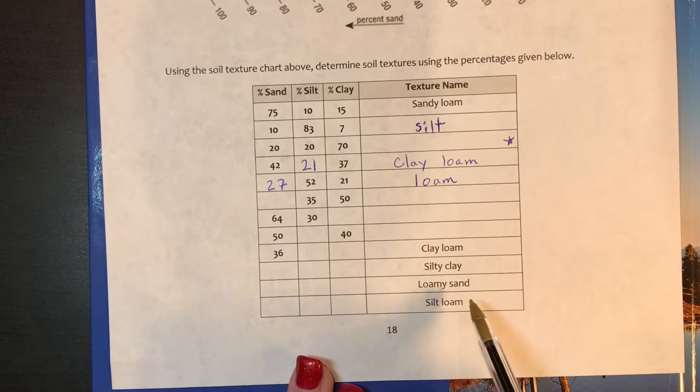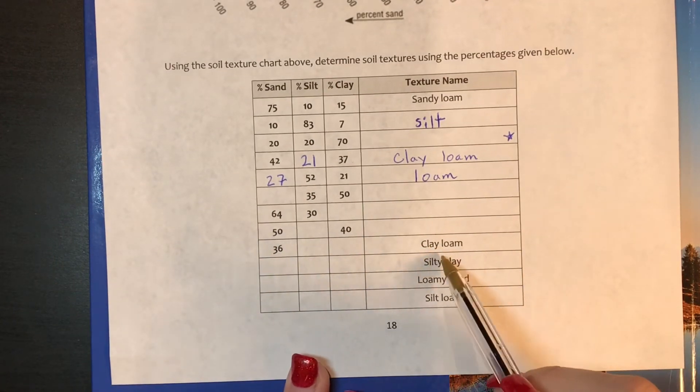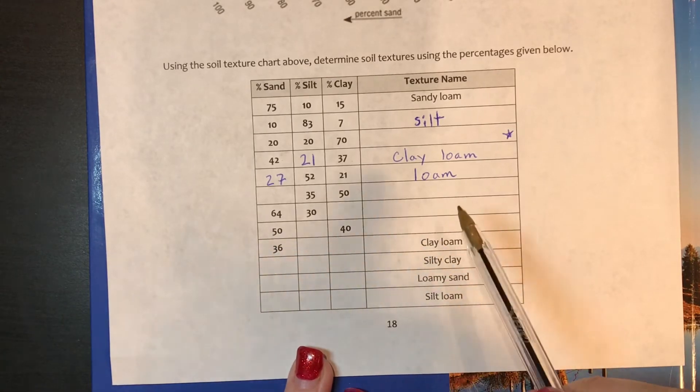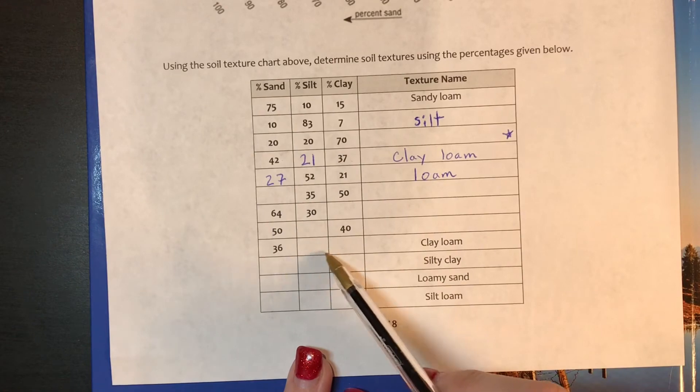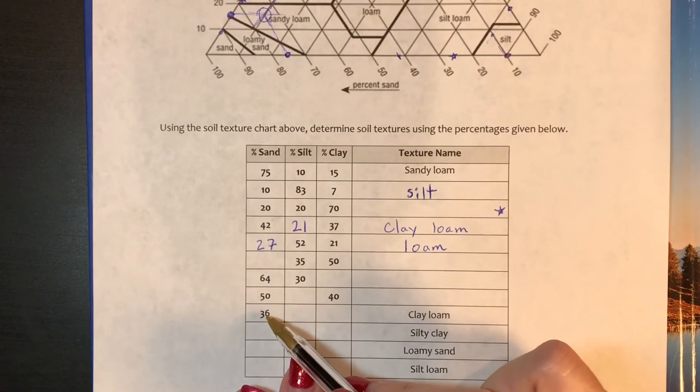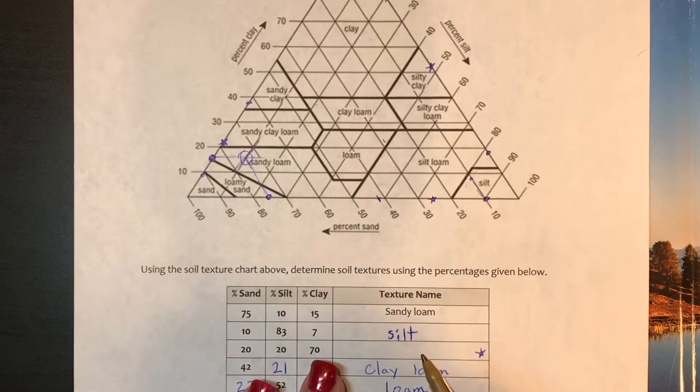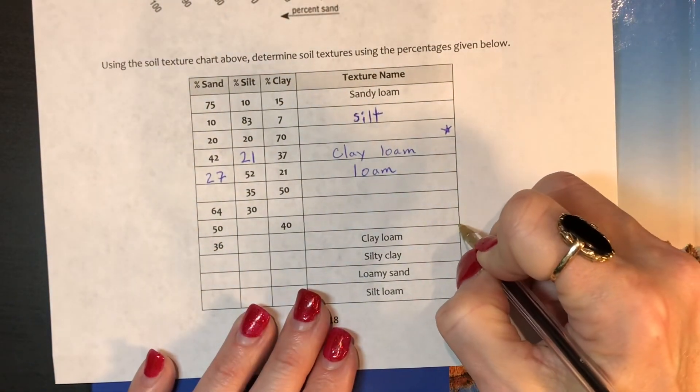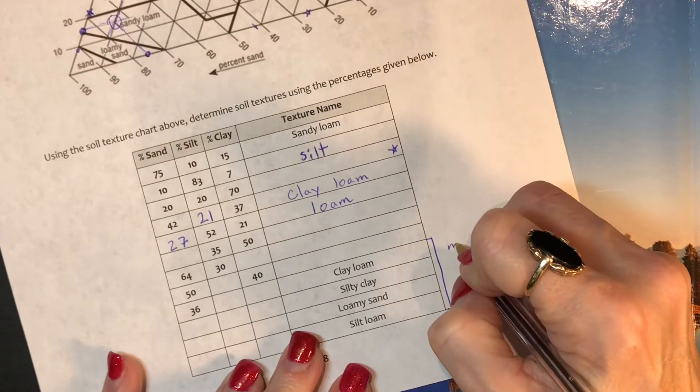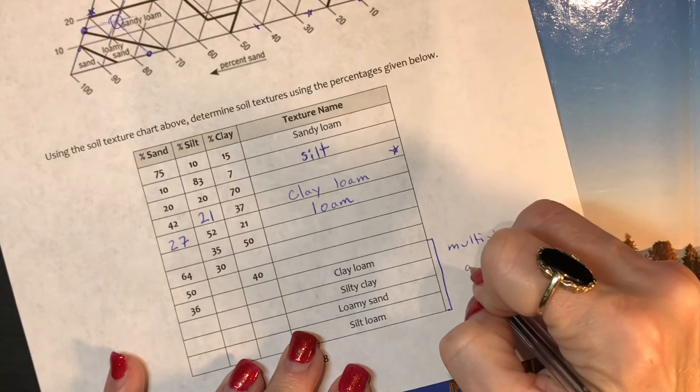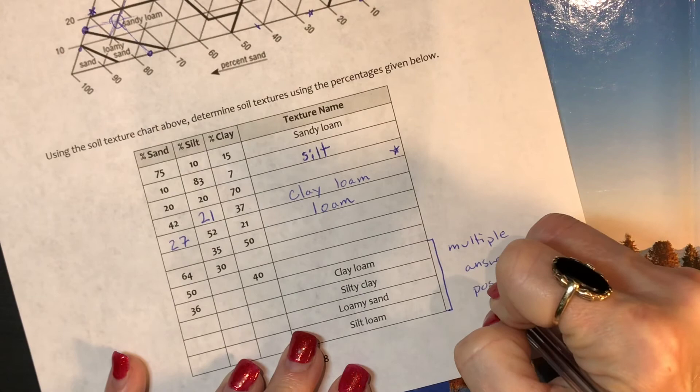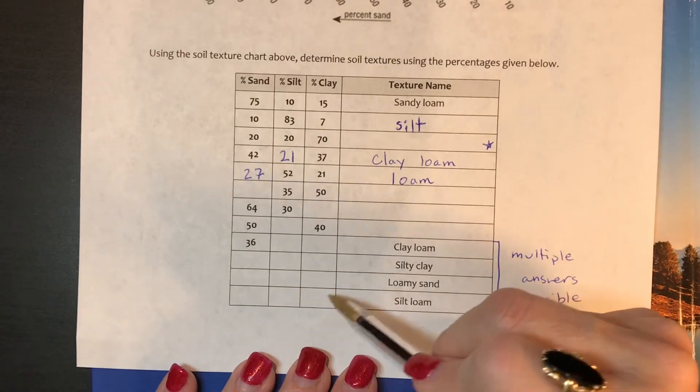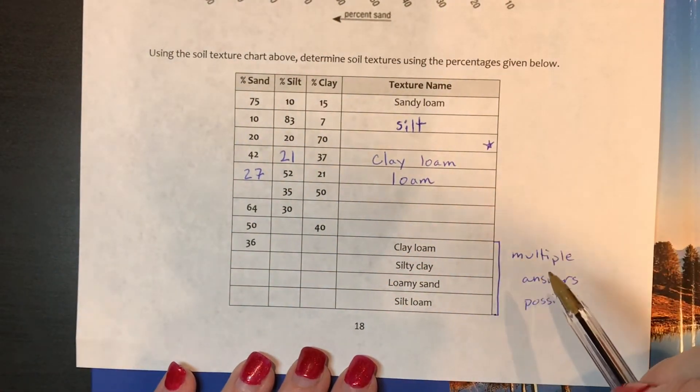You can see as we get towards the bottom, you have one here that has only one percentage. But as in the clay loam area, basically, as long as these two make it so this adds up to 100 and it is anywhere in the clay loam area, it's correct. So please realize for these, multiple answers are possible. These have no percentages, so as long as you do something that lands in that particular area, you're in good shape.